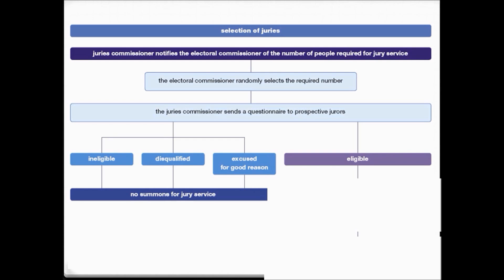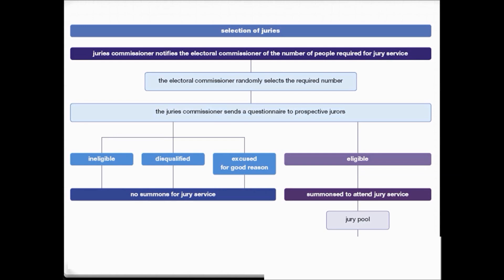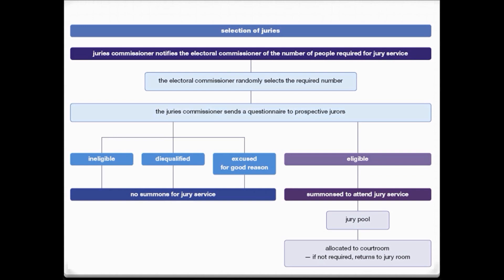If a person is determined to be eligible, they are summonsed to attend jury service and must go into court on the date they're told. They're placed into the jury pool, which is the pool of all prospective jurors. They're then allocated to courtrooms, and if required, they go onto the jury. If rejected, they return to the jury pool and could be allocated to later cases.